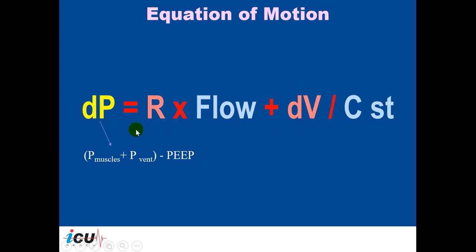In pressure control mode of ventilation, the pressure is fixed and the dependent variable is the volume. The volume will depend on the resistance and compliance of the system — the higher the resistance and the lower the compliance, the lower the volume resulting from the same applied pressure. That pressure is a combination of muscular pressure and ventilator pressure. So in volume control mode, if the patient starts to breathe on their own and participates in inspiratory efforts, the ventilator pressure will be lower. In pressure control mode, the patient's effort is added to the set ventilator pressure, resulting in a higher tidal volume.